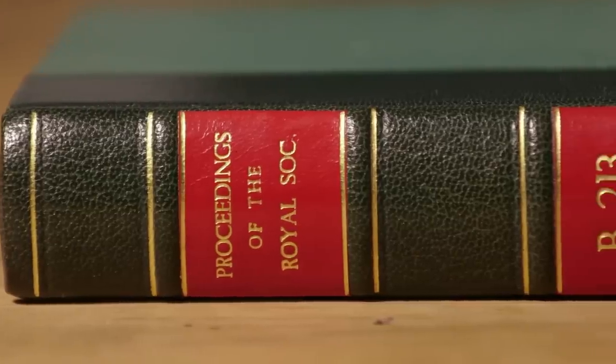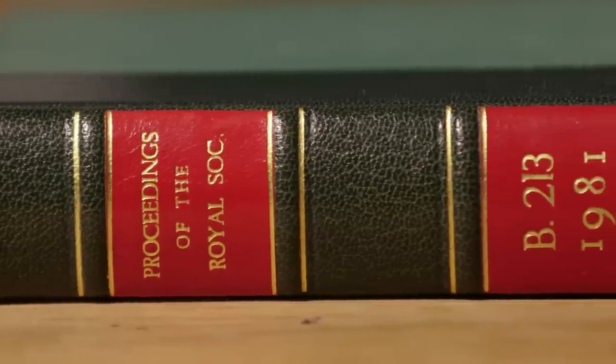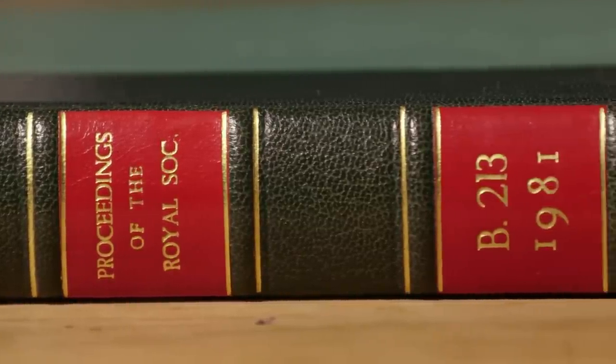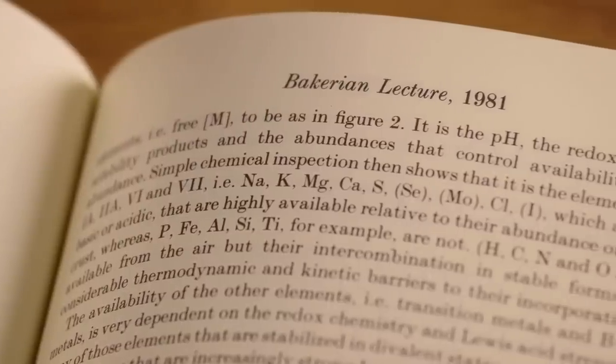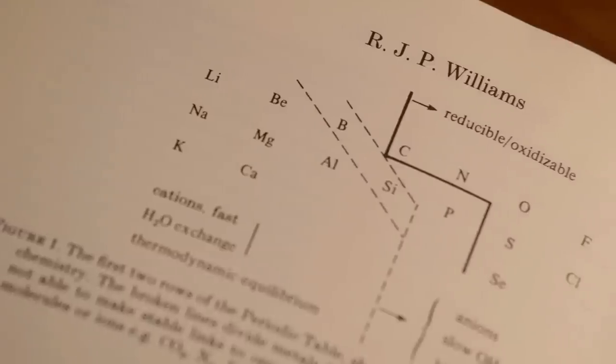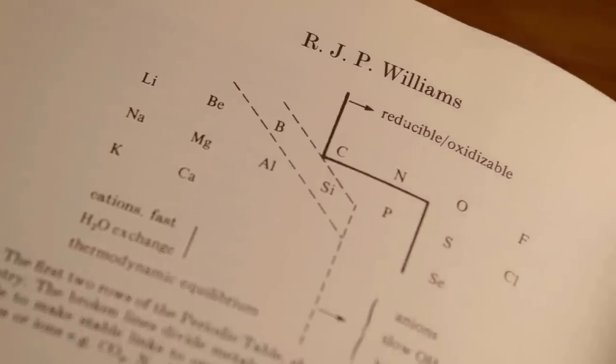Bob's idea is that actually there's been a hand brake on evolution in terms of the chemicals that are available to life, and so before oxygenic photosynthesis arrived and before the surface of the planet became oxidised, there were certain elements which were locked away and were not available to life.